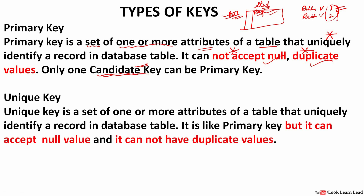The second key is the unique key. There is a similarity between the primary key and the unique key. For the primary key we learned three things: it uniquely identifies a record. For the unique key also it must uniquely identify the record. For example, take the address — the address for each student would be different, so it would uniquely identify the student. So it is like a primary key in that it uniquely identifies a record, but it can accept null values and it cannot have duplicate values.